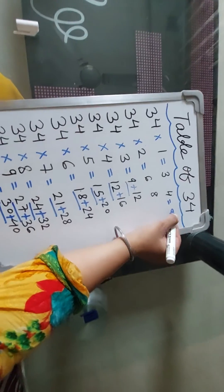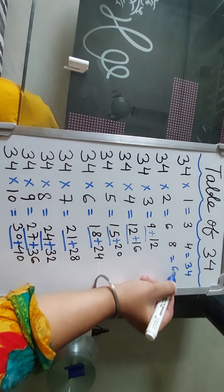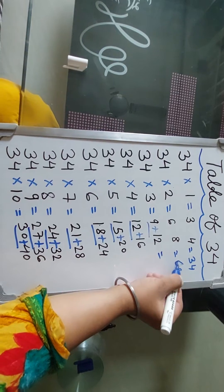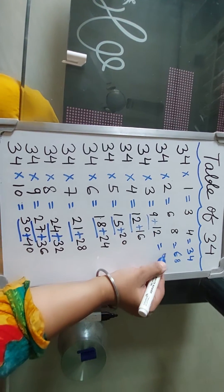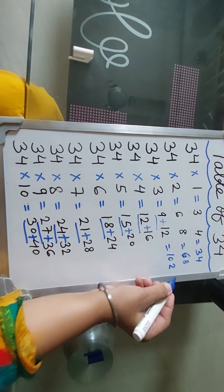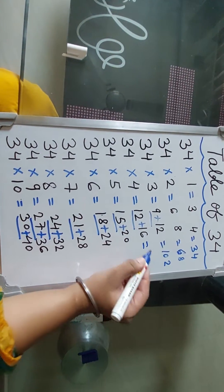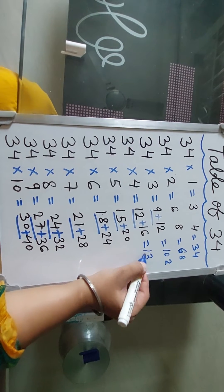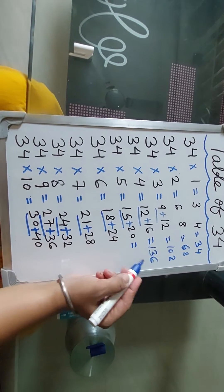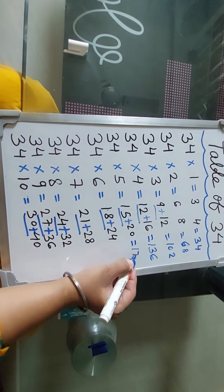It becomes the table of 34. 34 ones are 34, 34 twos are 68, 34 threes — 9 plus 1 ten and 2 — it becomes 102, 34 fours — 12 plus 1, 13 and 6 — it becomes 136, 34 fives — 15 plus 2, 17 — it becomes 170.